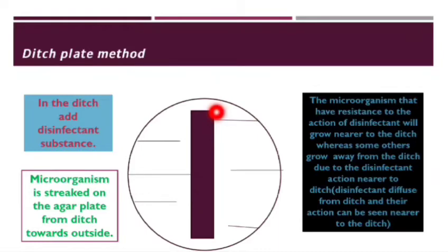Some of the microorganisms that have resistance to the action of the disinfectant will be growing nearer to that of the ditch, as we can see here it is just nearer to the ditch there is microbial growth. But in other cases, because of the action of the disinfectant, it does not grow nearer to the ditch. As we can see here, it's absent in this place.